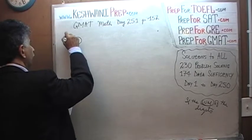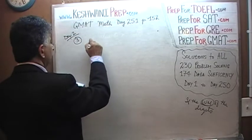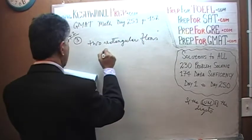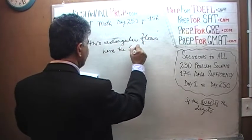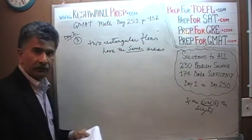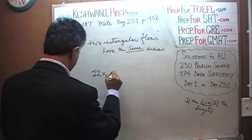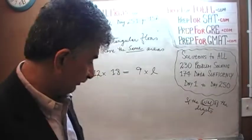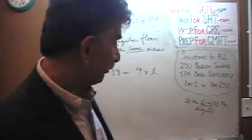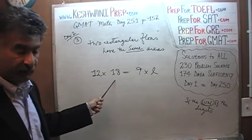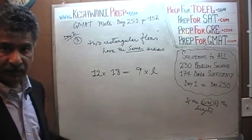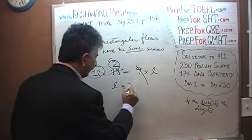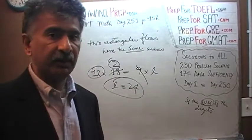Number 3 — also from day number 1. We have two rectangular floors with the same area. One floor has dimensions 12 by 18; the other has dimensions 9 by some unknown length L. Since the areas are equal: 12 times 18 equals 9 times L. Divide both sides by 9 — the 9 drops out and 18 becomes 2. So L equals 2 times 12, which is 24. The length of the second rectangle must be 24.